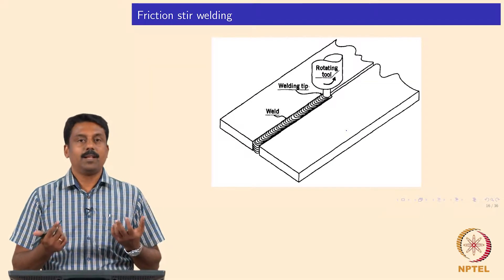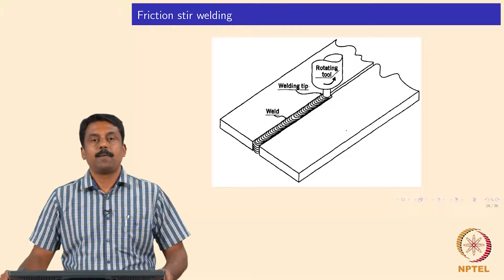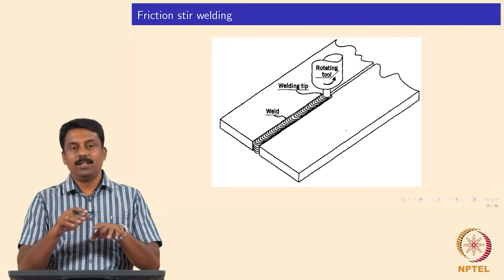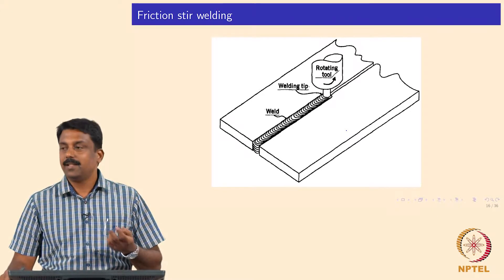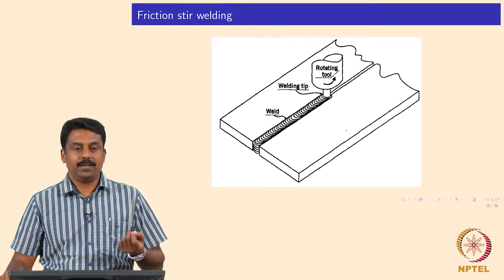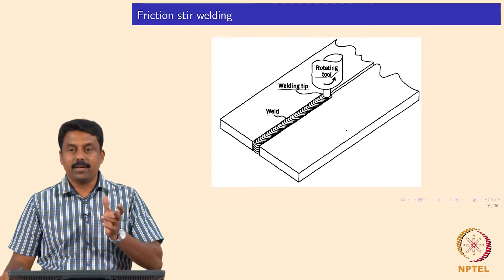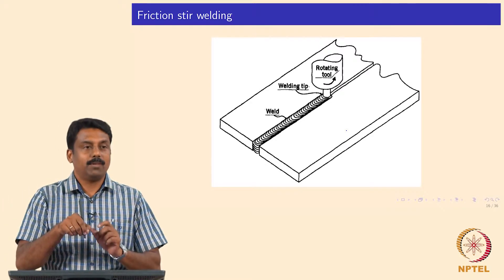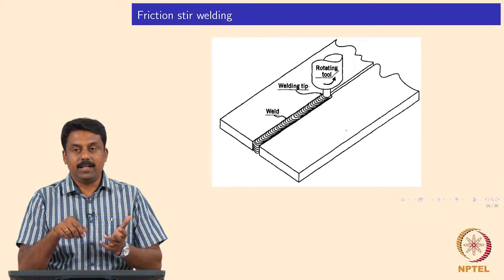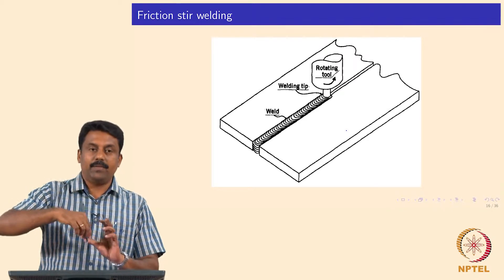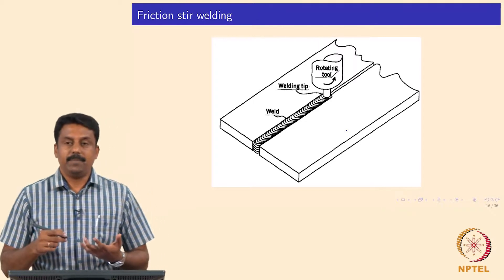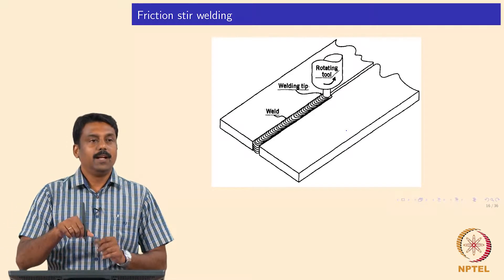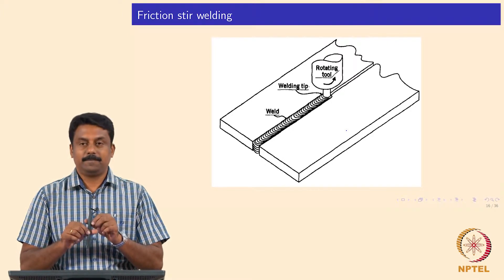We can also achieve heat by inserting a pin and rotating it at the interface. Take a simple nail, insert it at the interface, clamp it together, and rotate the nail. The interface between the nail and the base material is heated by friction due to the rotation. The nail, made of harder material, rotates, generating heat and increasing interface ductility. The rotating nail moves material from one interface to the other, causing mechanical deformation. This process is known as friction stir welding.